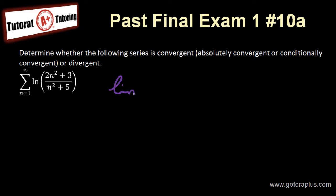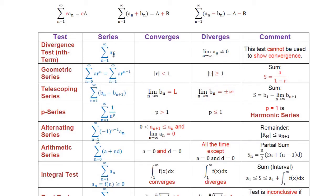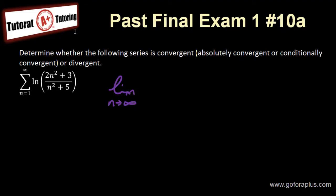That's always the first test that I want to do, just to see n approaching to infinity. This is what it is, right? n approaching to infinity of my sequence in the series here. So ln of 2n squared plus 3 over n squared plus 5.